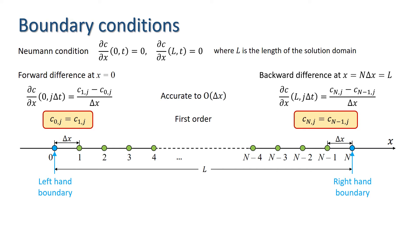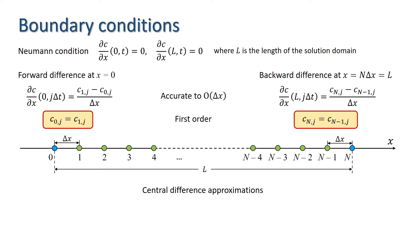In the explicit case, these can be implemented directly by updating c at time step j+1 for all internal nodes first, then using boundary conditions to find c_{0,j+1} and c_{N,j+1}. However, these approximations are only first-order accurate, while the spatial derivative approximations for internal nodes were second-order accurate. It makes sense to preserve this accuracy using central difference approximations, which involves introducing fictitious ghost nodes at coordinates −delta x and (N+1)·delta x.